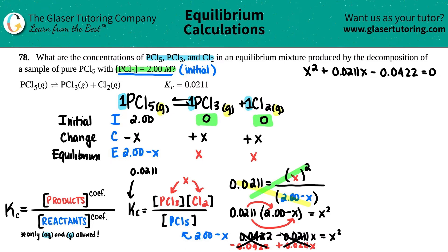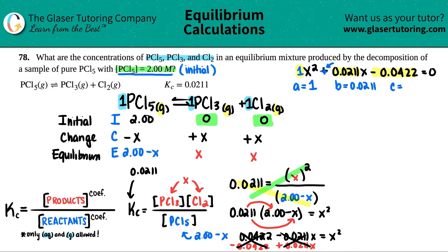Now identify a, b, and c. The a value is the coefficient in front of x², which is 1. The b value is the coefficient in front of x, which is 0.0211. The c value is the remaining constant — it was preceded by a negative sign, so c = −0.0422.